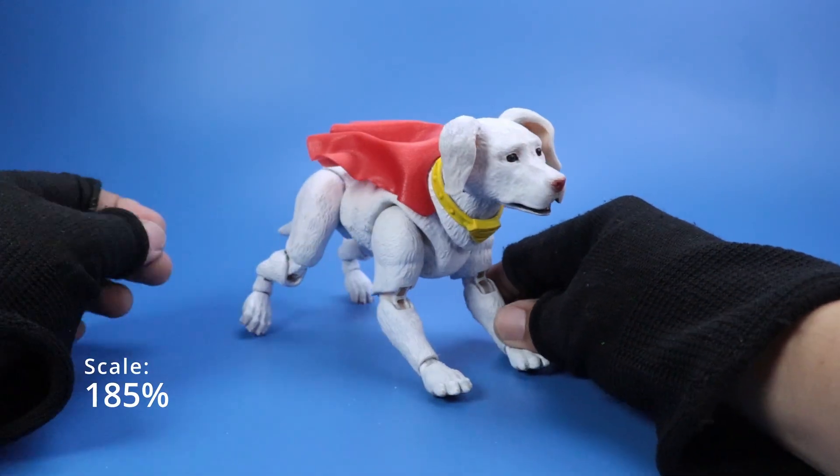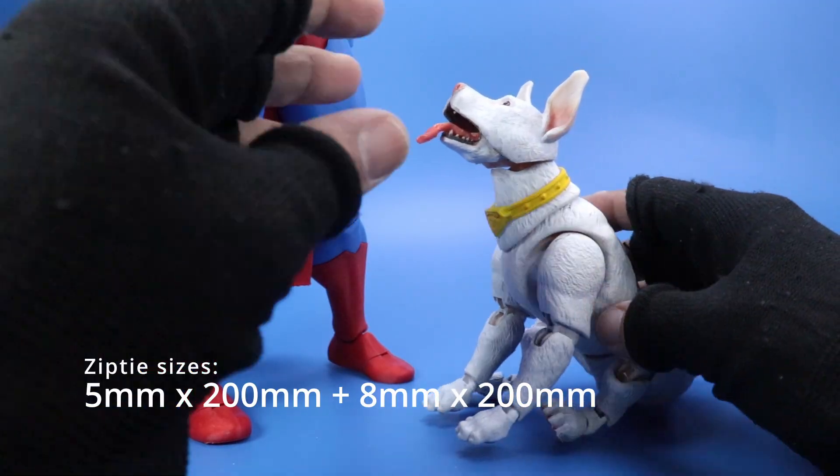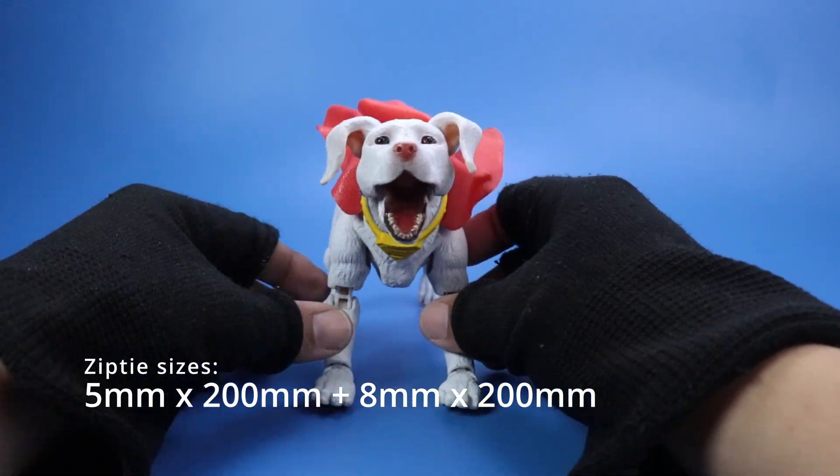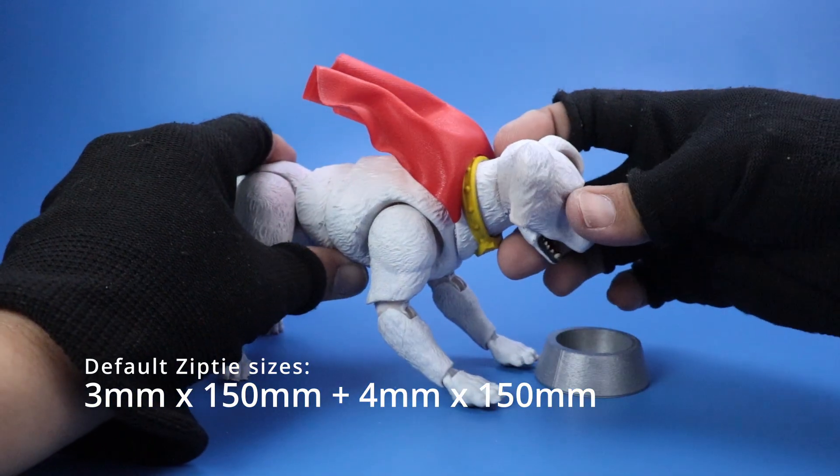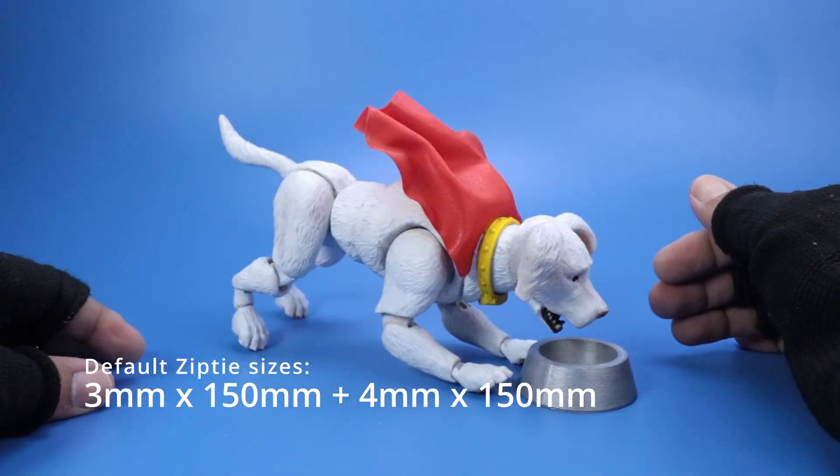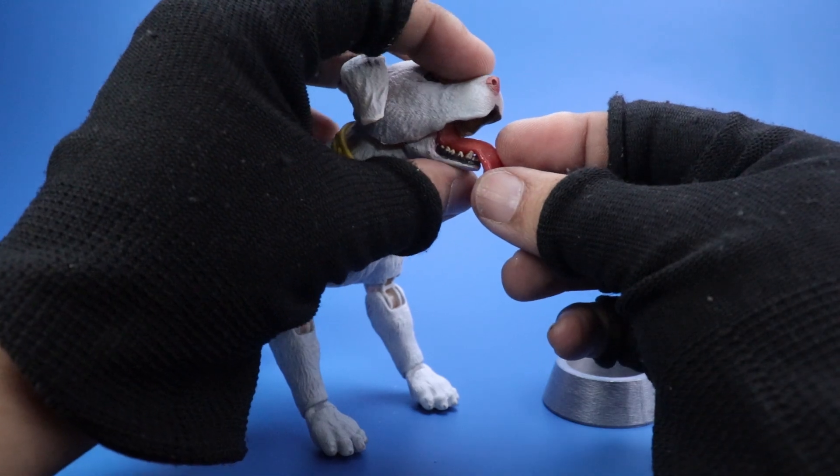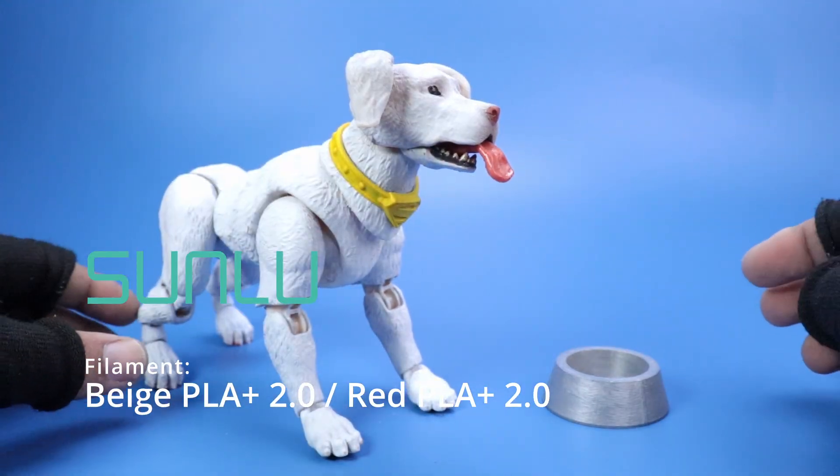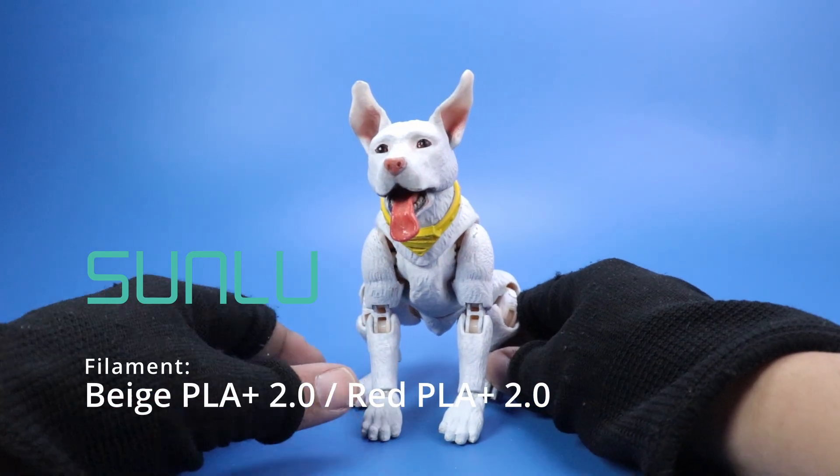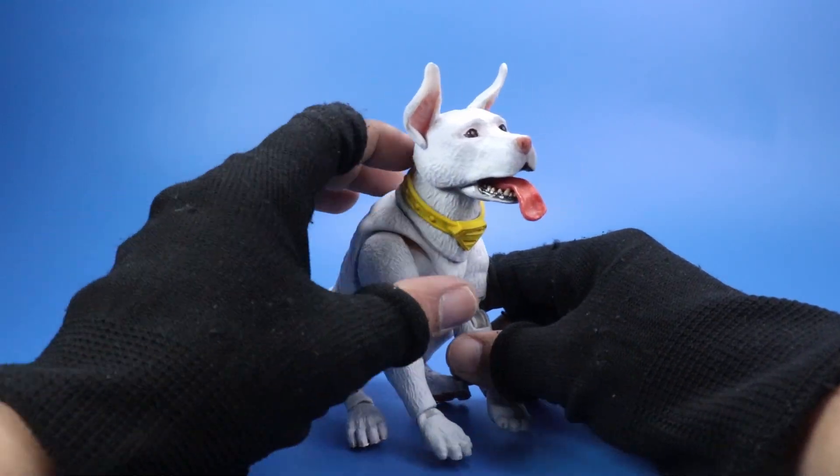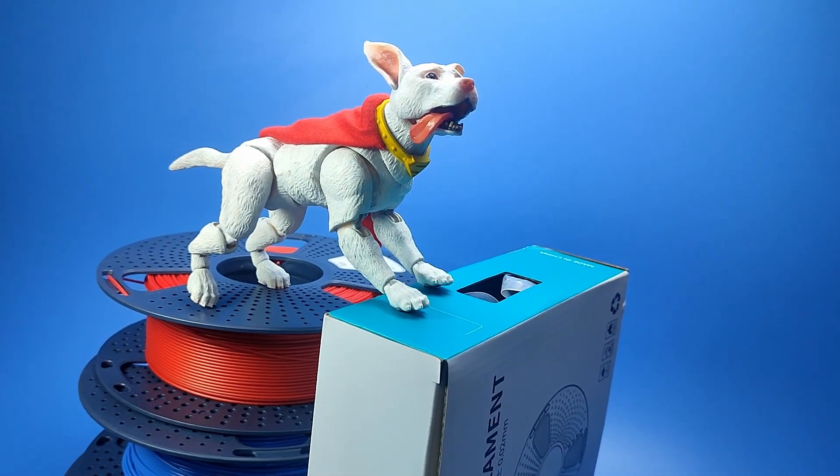This figure was printed at 185% scale. For this size, I used 5mm by 200mm and 8mm by 200mm zip ties. If you're printing at the default 100% scale, you'll need 3mm by 150mm and 4mm by 150mm zip ties instead. For the filament, I went with Sunlou beige PLA plus 2.0 and Sunlou red PLA plus 2.0. These were kindly sent over by Sunlou, who also sponsors this channel. They've got a really solid lineup of 3D printing supplies for both FDM and resin printing.